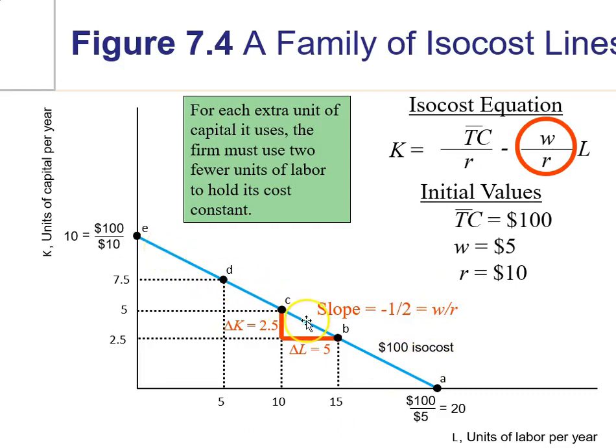And what that says, simply to spend the same amount of money, if you give up 2.5 machines, you can exchange those for 5 workers and it costs you the same. So, this indicates that your machines cost twice as much to rent as you do your workers. So, this is the slope of negative 1/2, spending $100.